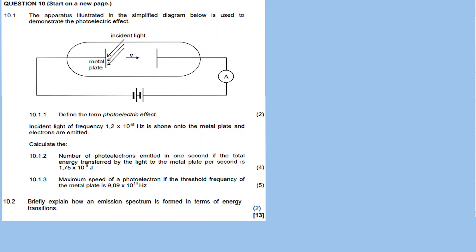So here we are answering question 10, question 10.1. The apparatus illustrated in the simplified diagram below is used to demonstrate the photoelectric effect. I'll explain the photoelectric effect using a sort of analogy. Imagine a soccer field — imagine it as a piece of metal or a sheet of metal.